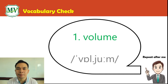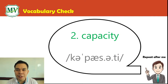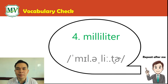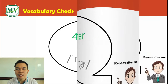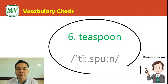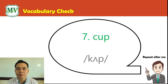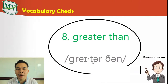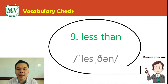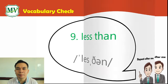Number 1: volume. Number 2: capacity. Number 3: liter. Number 4: milliliter. Number 5: tablespoon. Number 6: teaspoon. Number 7: cup. Number 8: greater than. Number 9: less than.